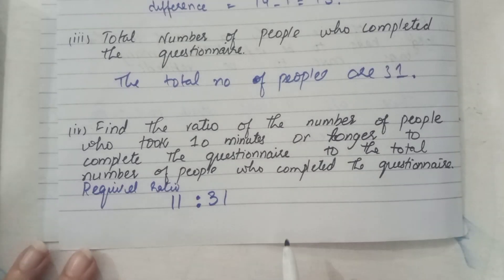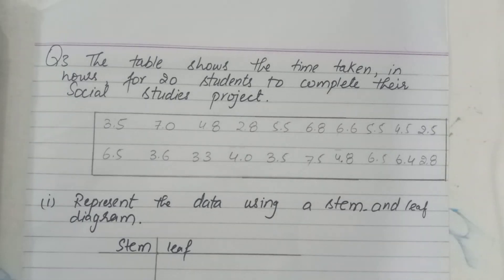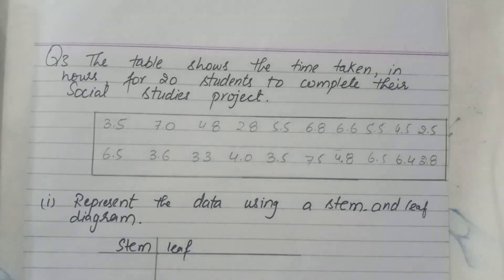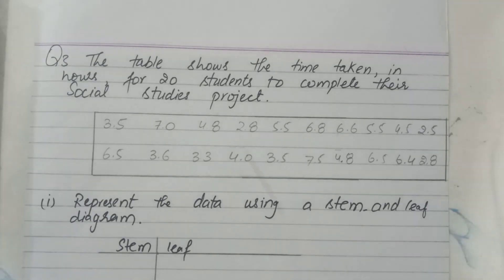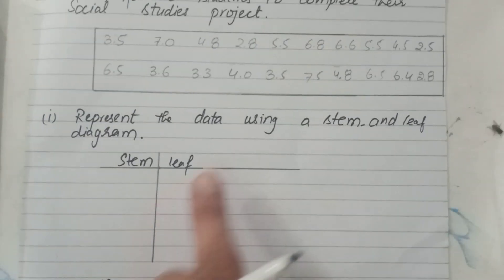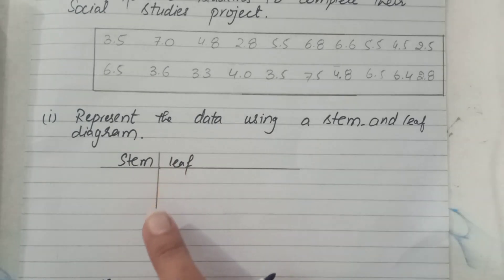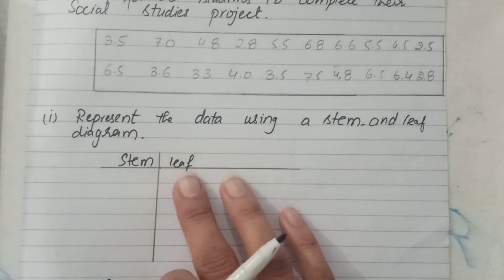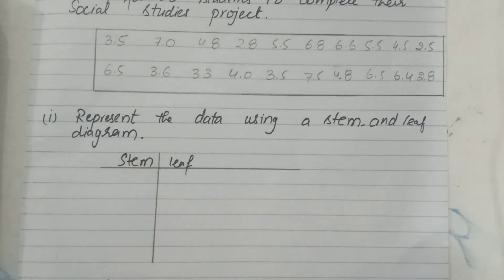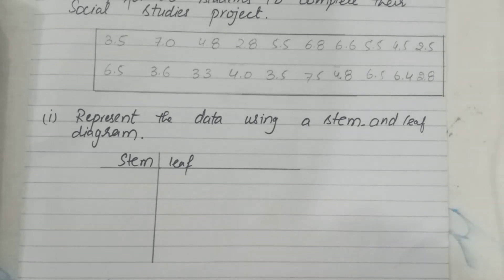Question number two is solved. Question number three: the table shows the time taken in hours for 20 students to complete their social study project. The data is provided, and in part one we have to represent this data using a stem-and-leaf diagram.